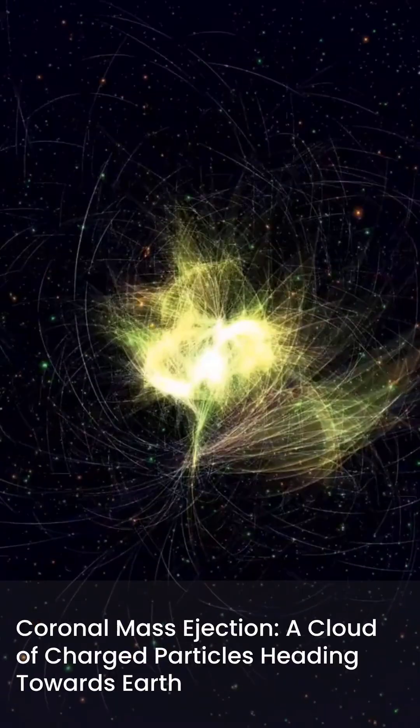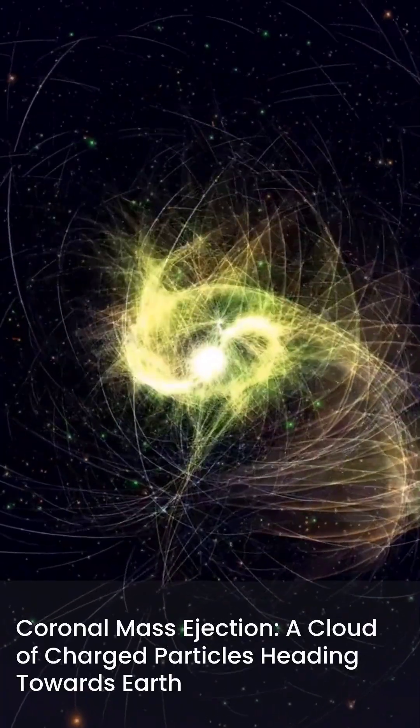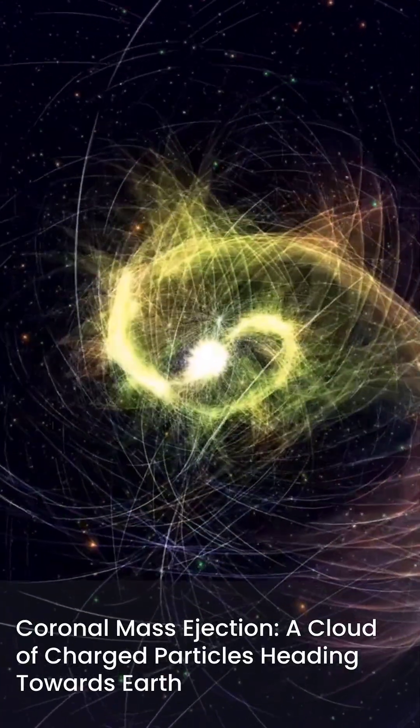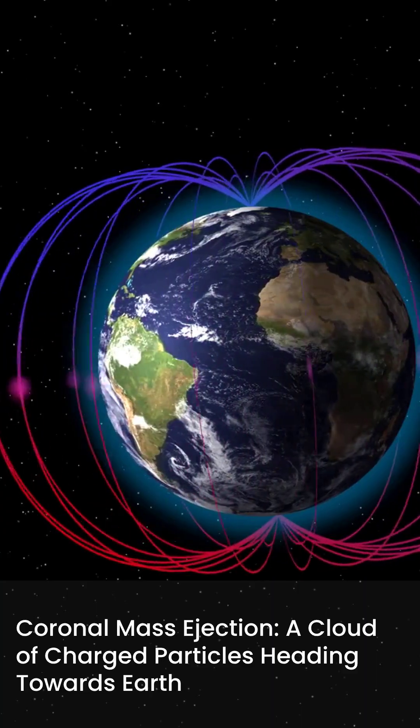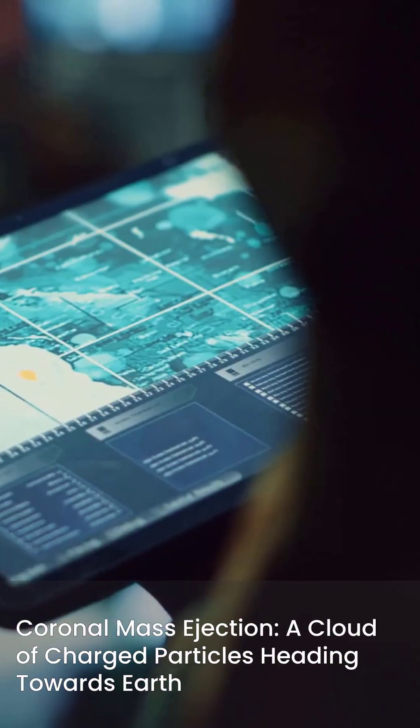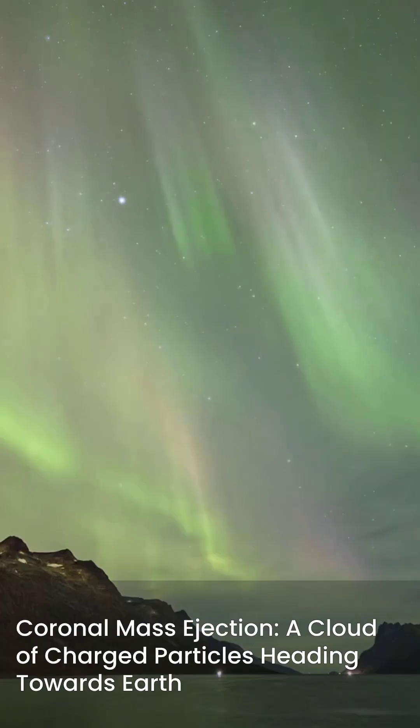A giant cloud of charged particles racing through space at nearly 4.4 million miles per hour. When it hits Earth, it could disturb satellites, weaken GPS accuracy, and trigger a geomagnetic storm.